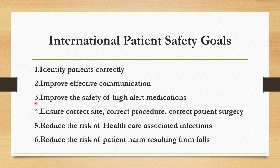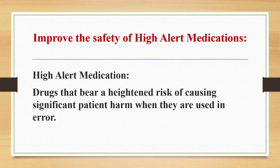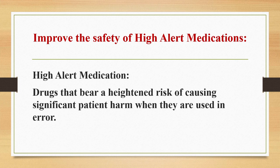Today we are going to see about the third one, that is improve the safety of high alert medications. What do you mean by high alert medication? For instance, instead of tablet paracetamol 500 mg, you are taking tablet paracetamol 1 gram — that is 2 tablets. That will not cause that much effect. But if you are administering any high alert medications to a wrong patient by a wrong route or wrong dose, sometimes that may end up the life of your patient. High alert medications are drugs that bear a heightened risk of causing significant patient harm when they are used in error.